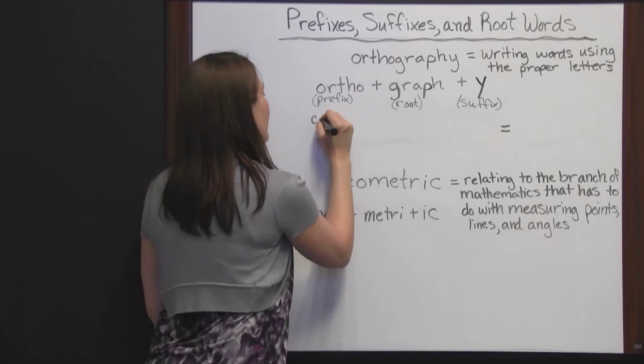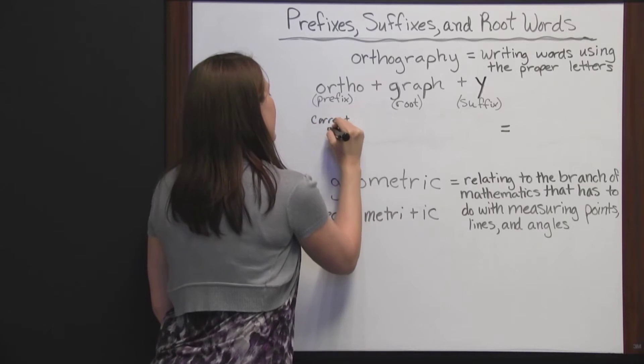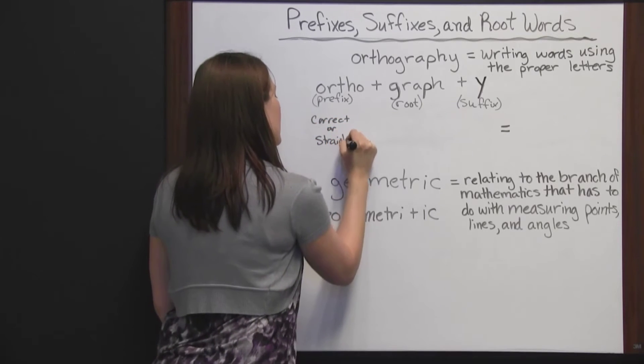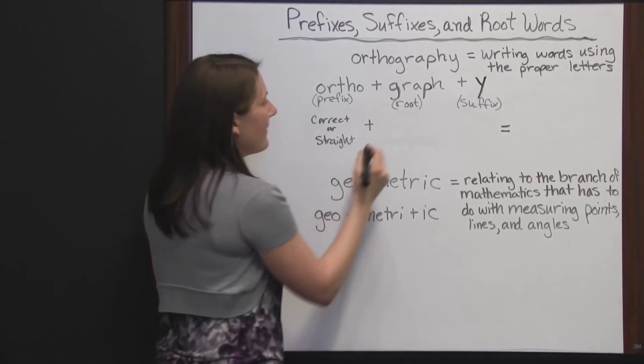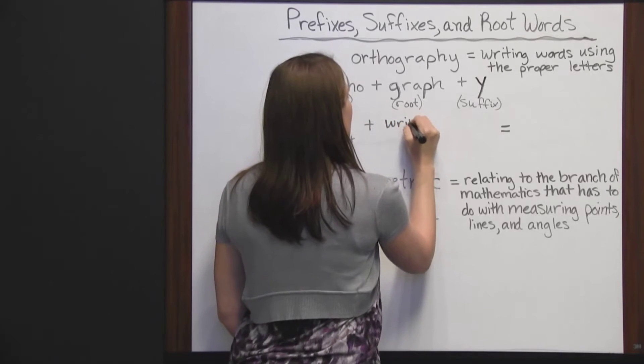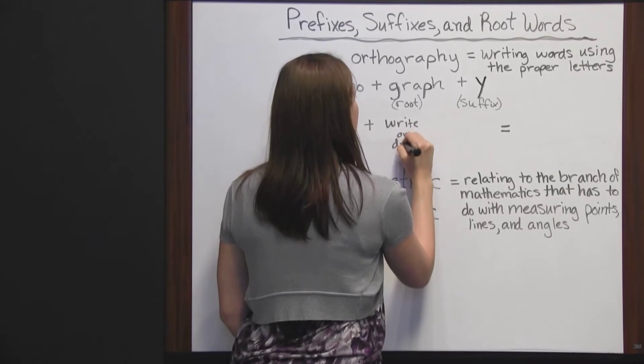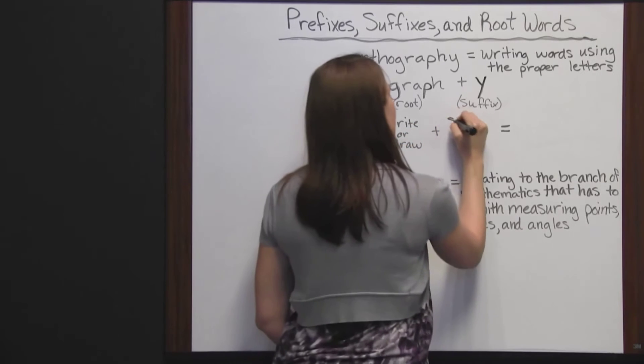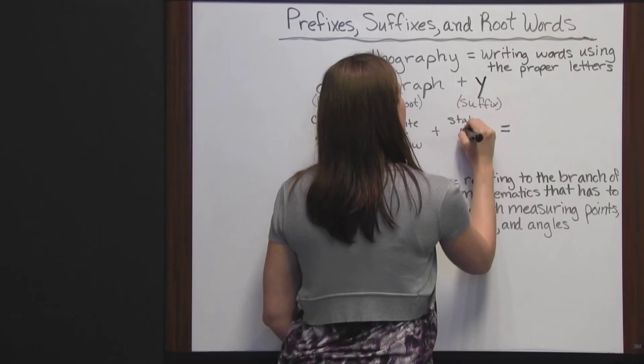Ortho means correct or straight. Graph means write or draw, and y means the state or condition of.